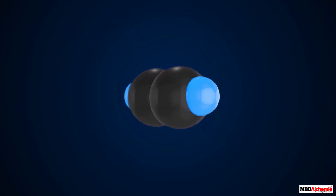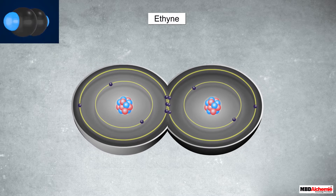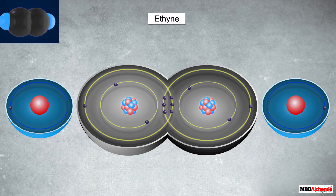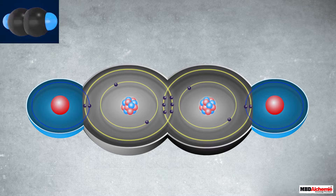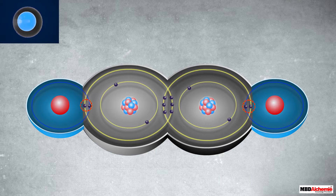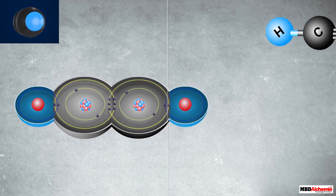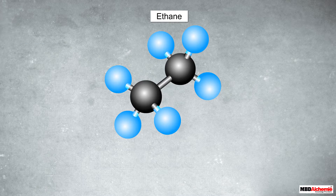Finally, let us see the bonding between the atoms in an ethyne molecule. In ethyne, two carbon atoms are bonded to each other by sharing three pairs of electrons. This leaves each carbon atom with one unsatisfied valency, which is satisfied by sharing one pair of electrons with one hydrogen atom. Therefore each carbon atom combines with only one hydrogen atom to complete its octet. Due to the sharing of three pairs of electrons there is a triple bond between the two carbon atoms, and each carbon atom forms one single bond with one hydrogen atom.